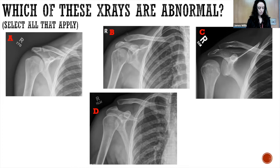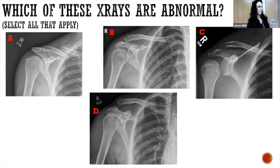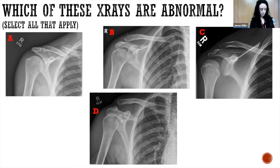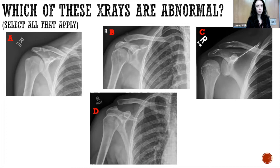Almost everybody said C — which is showing a shoulder dislocation. The next most popular answer was D, which is an AC joint injury. The next most common was A, which is a clavicular fracture. And fewest people chose B, which is also abnormal — it is also an AC joint separation. So all of these X-rays are abnormal.